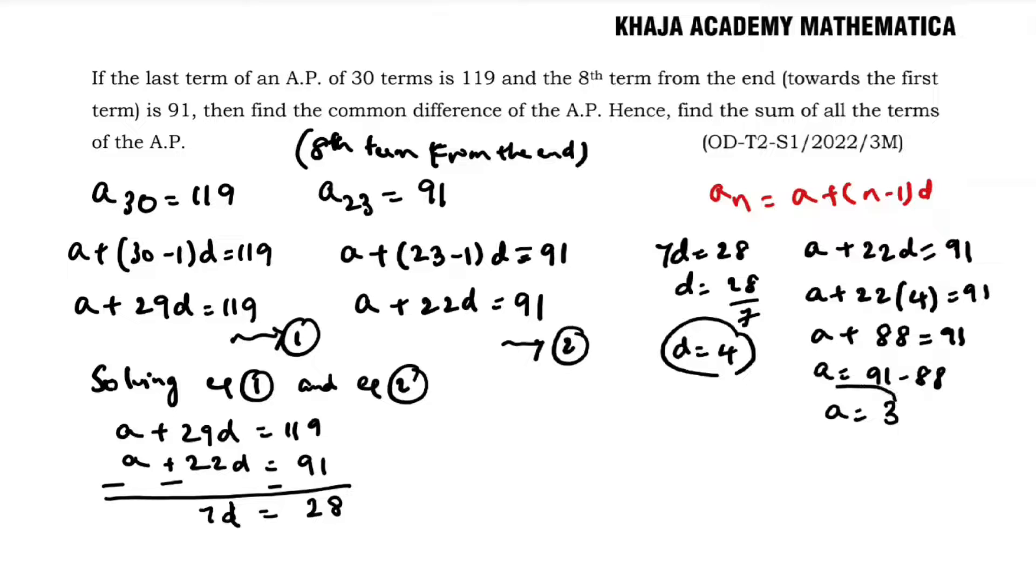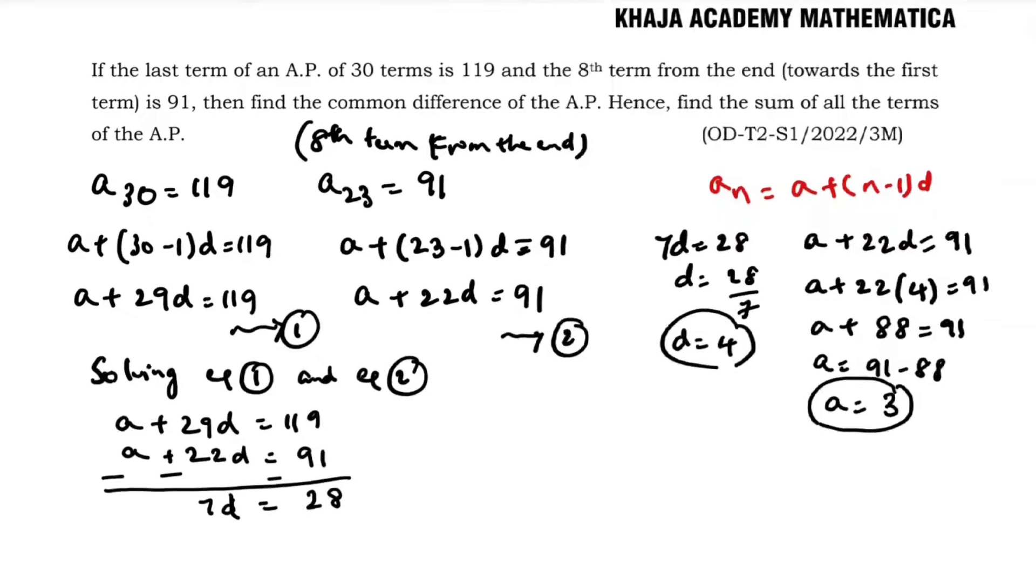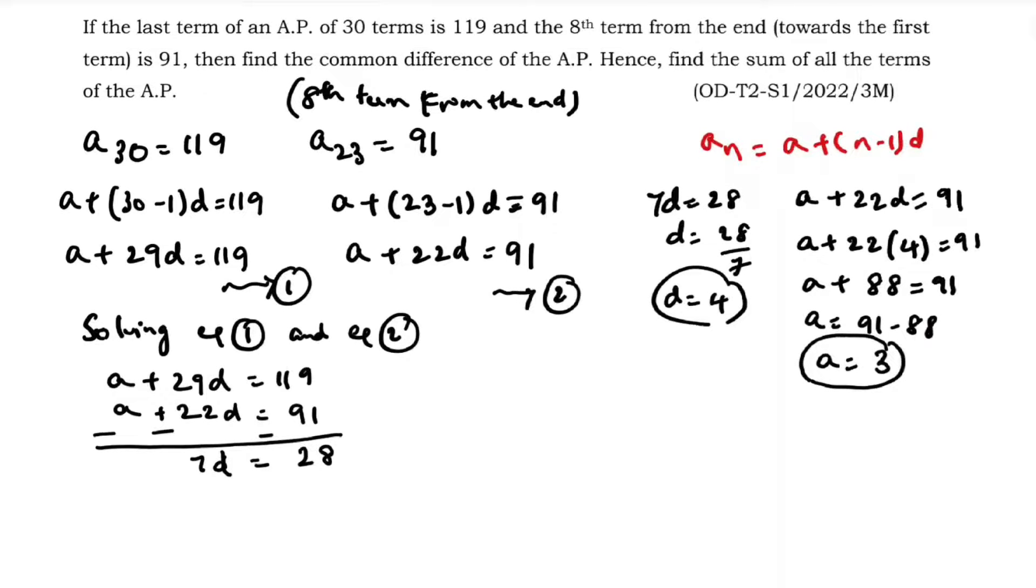You got a and d. Now you need to find s30, the sum of 30 terms. s30—I have the last term, so I'll use the formula n/2 × (a + l). So 30/2 × (a is 3 + last term 119).